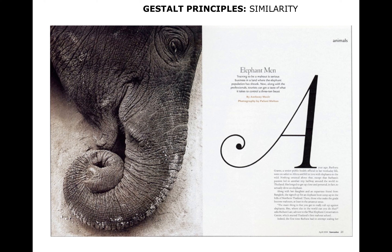You can obviously see where the similarity is here with the curve of the trunk of the elephant and the sweet little face, and then the curve and serif of the stem of the A.